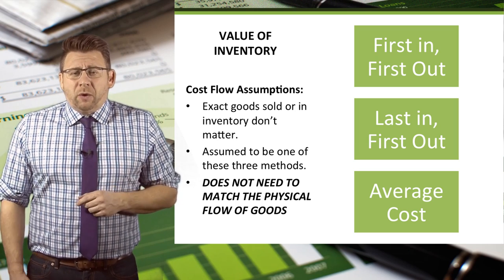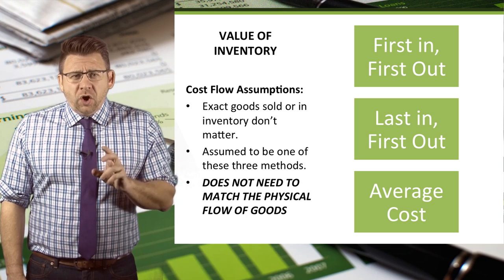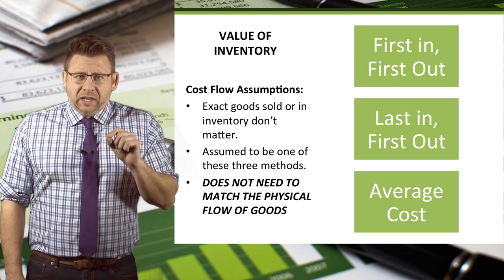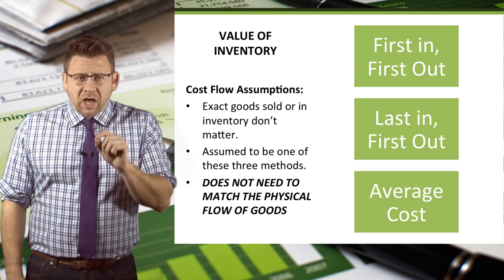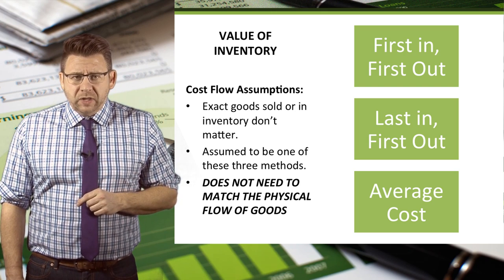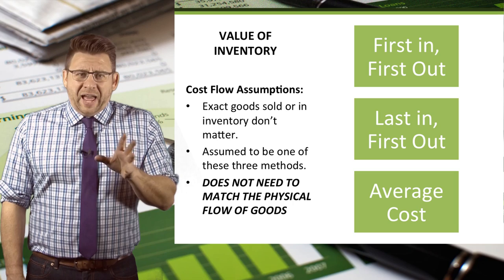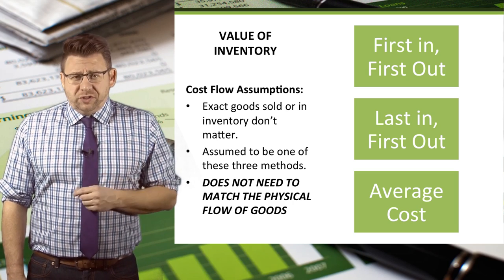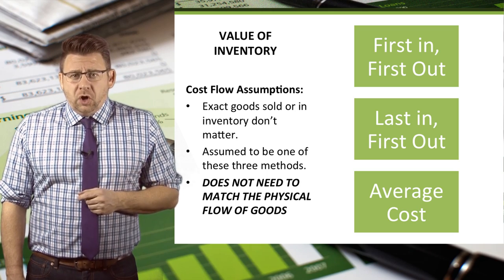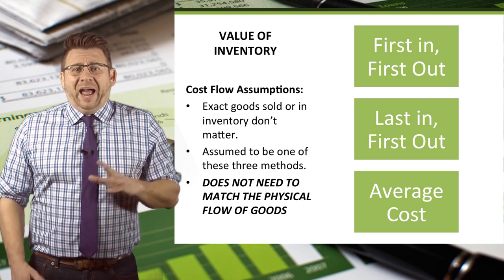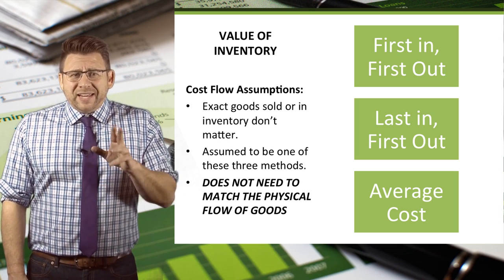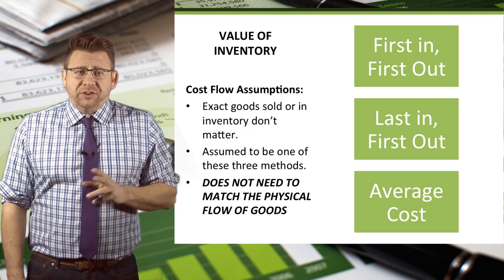Let me be clear about what I mean. We know which items were sold — let's say a gallon of milk — but the exact gallon of milk and the exact cost of that one specific gallon isn't something most businesses are going to track. So they assume that the gallon sold was the first one purchased, or the last one purchased, or some average of all the gallons they had on hand. That's how these cost flow assumption methods are used.